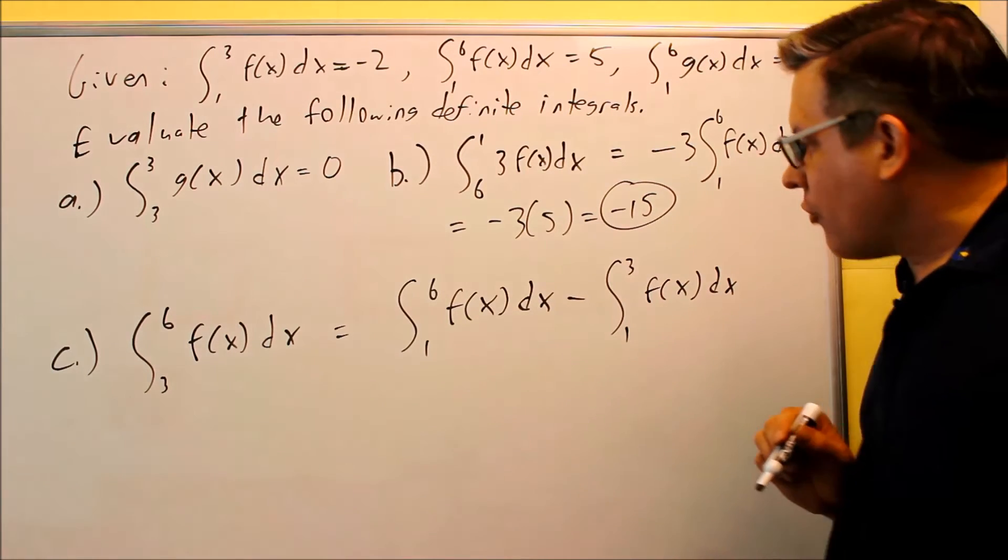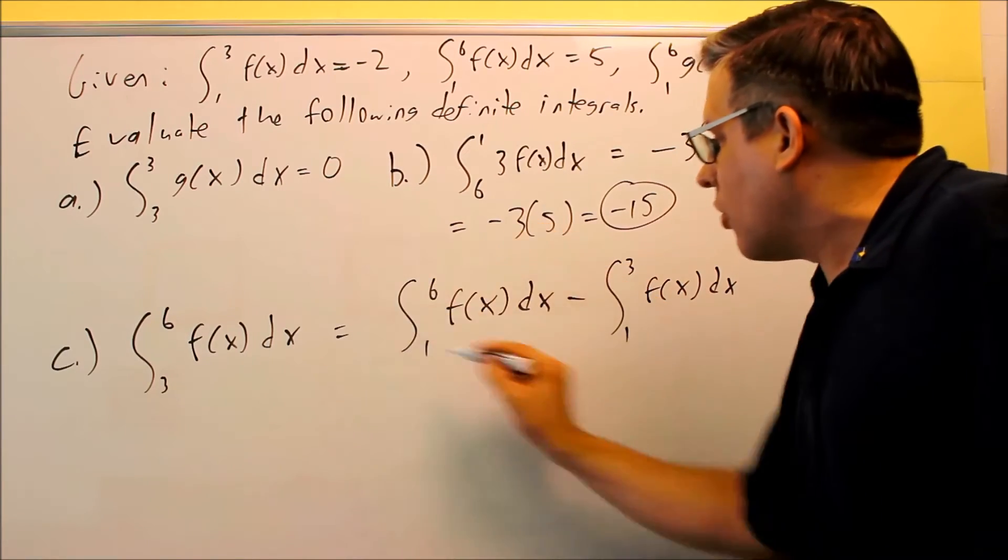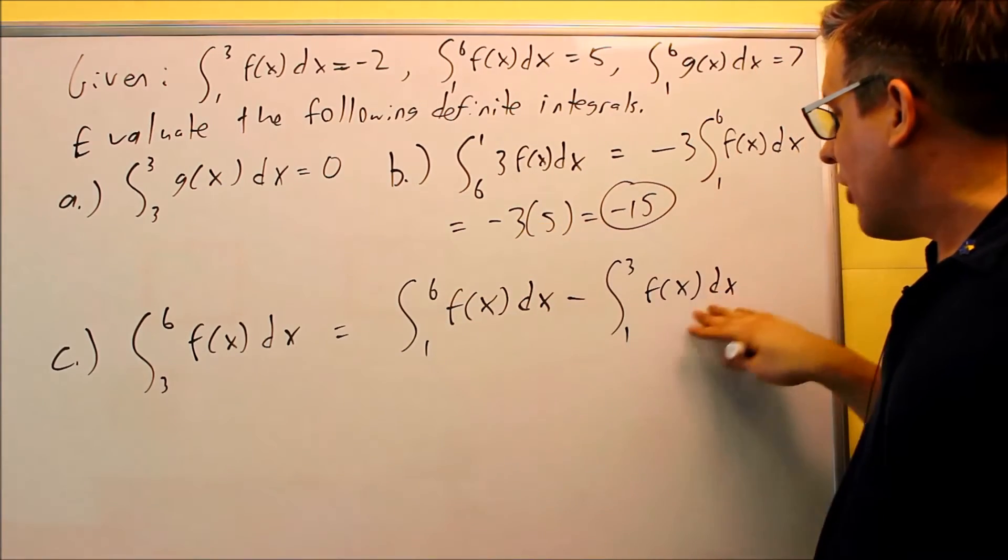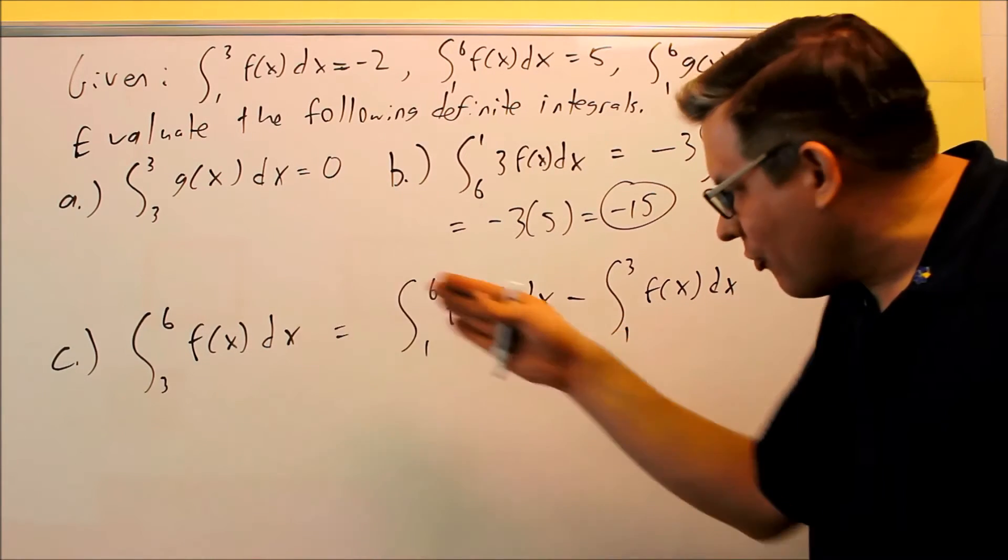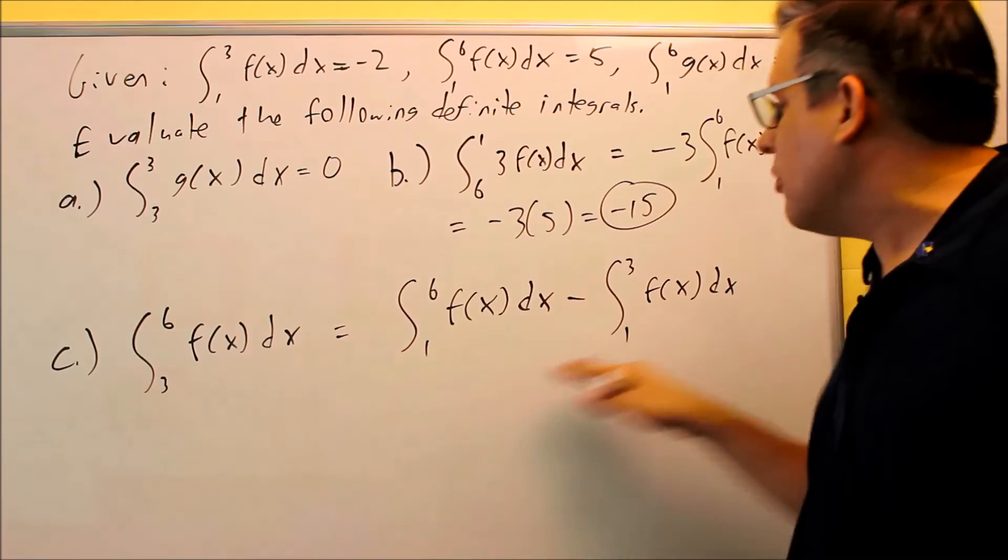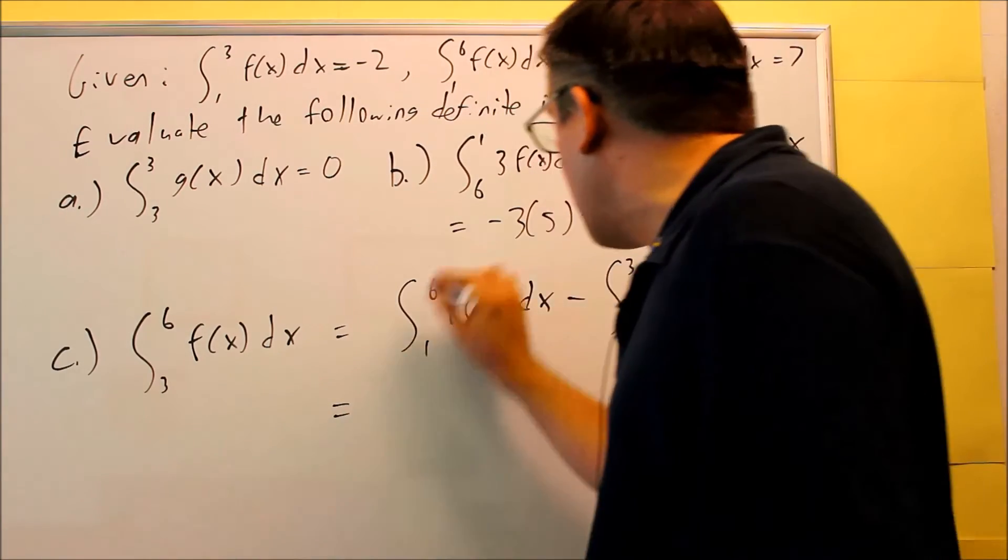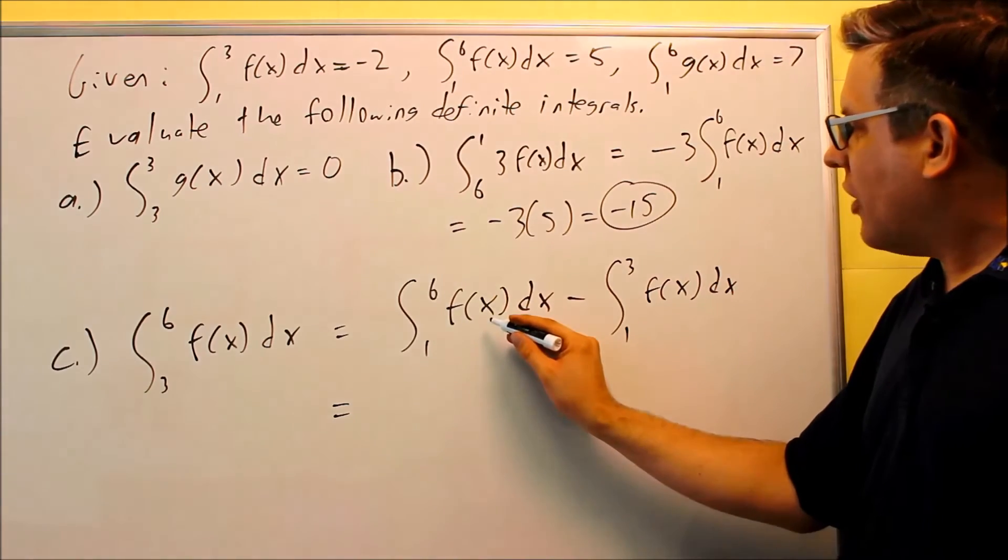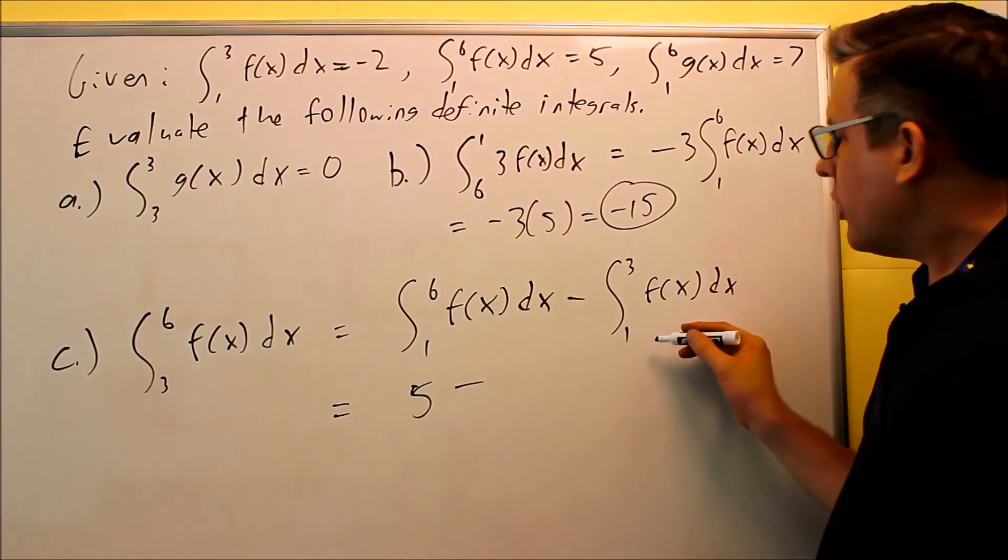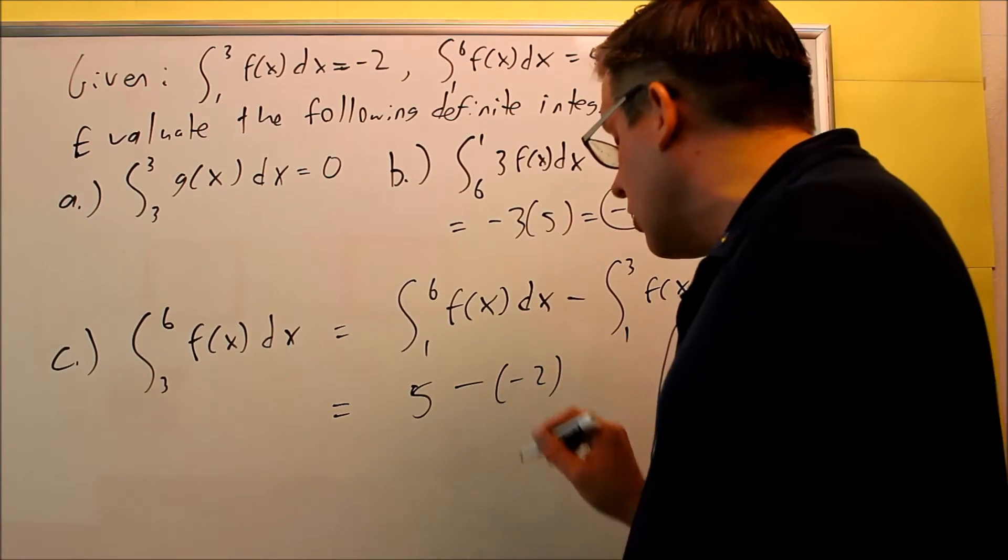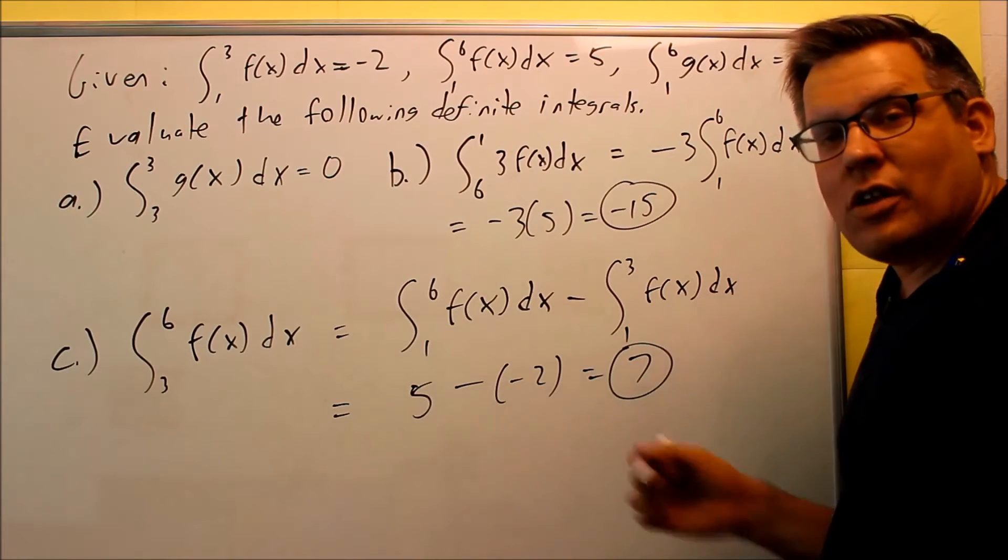The logic for that is you can go from one to three and then from three to six, that's going to get you the whole entire interval. So basically if I take this and I move it across the equal sign, I'll basically get the same property I had before. So all I'm doing is using that property, moving this over to here, it's subtraction. So now I'm just going to plug in the numbers for that. One to six f of x dx is five. And then I'm subtracting the one from one to three, which is negative two. So five minus negative two, that's going to give me seven as my final answer.